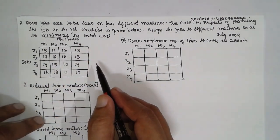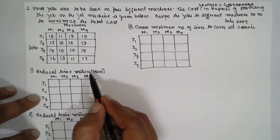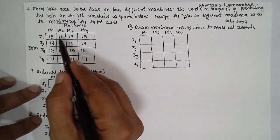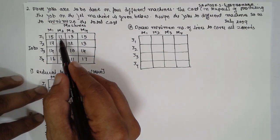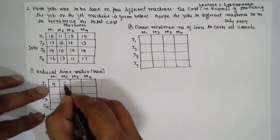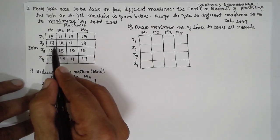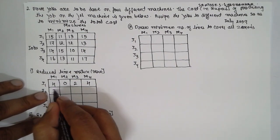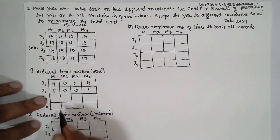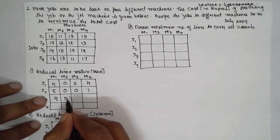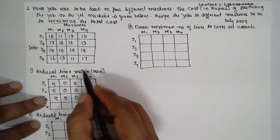First step: reduce the matrix row-wise. We select the smallest value in each row and subtract it from all other values in that row. In row 1, the smallest is 11: 15−11=4, 11−11=0, 13−11=2, 15−11=4. In row 2, the smallest is 12: 17−12=5, 12−12=0, 12−12=0, 13−12=1. In row 3, the smallest is 10: 14−10=4, 15−10=5, 10−10=0, 14−10=4.